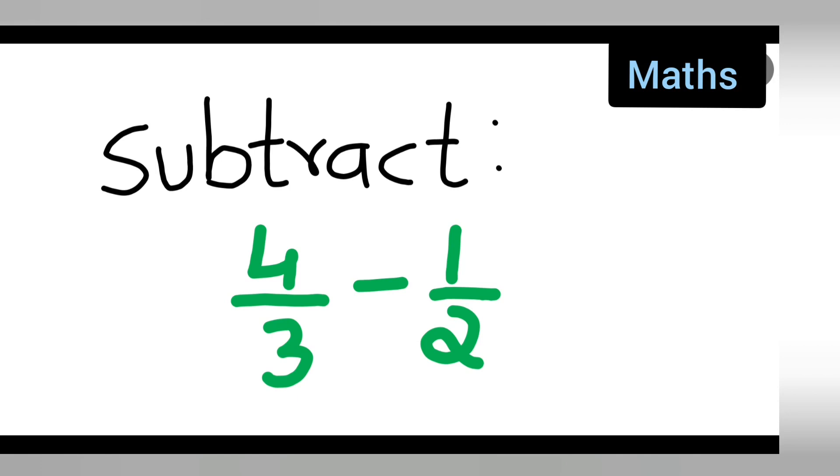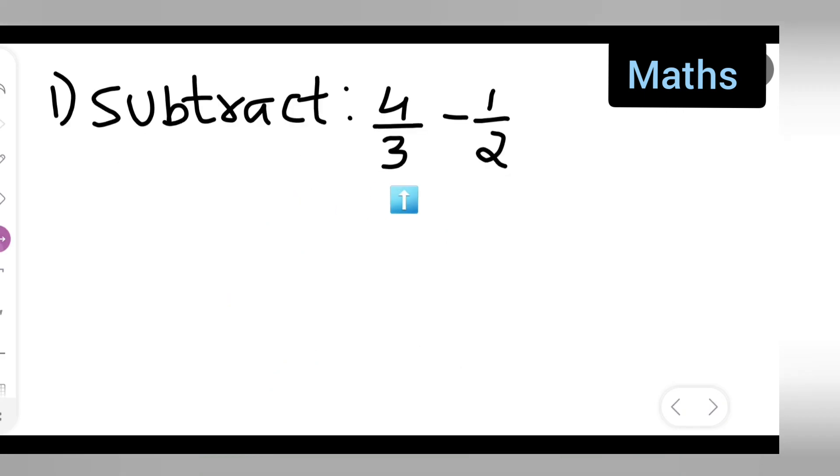Welcome to today's class of mathematics. Today's question is subtract 4 upon 3 minus 1 upon 2. Let us see how to subtract the given fractions. First, you can write down the question: subtract 4 upon 3 minus 1 upon 2. Here you can see the denominators are different - you have two different denominators.